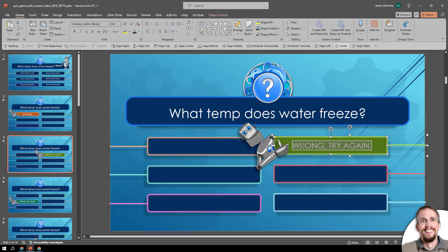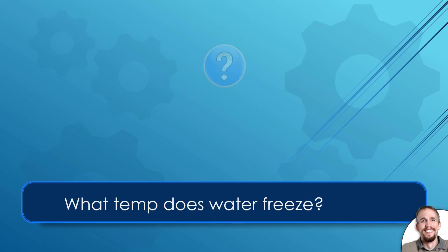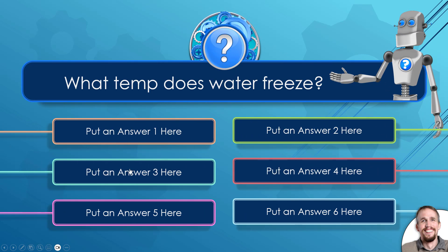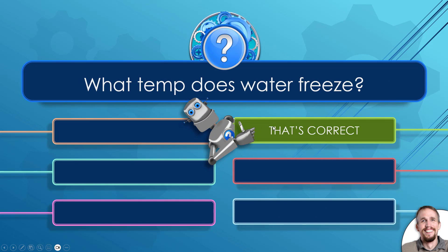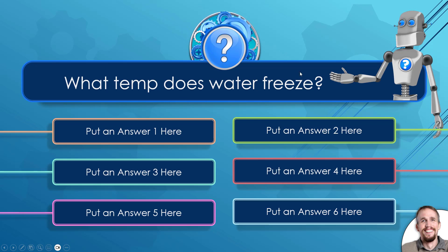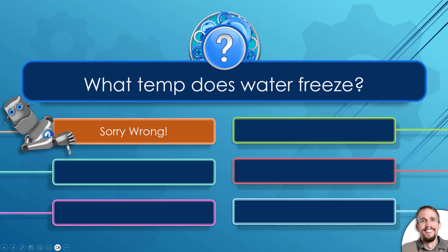Now this says 'wrong answer,' so I'll change this to 'that's correct.' Now when I play the slideshow and click on the answers, if I click on the green one, that's the correct answer because I changed the text on that slide. These are hyperlinked to each slide — the green one is hyperlinked to go to the green slide, the pink one to the pink slide, and so on. Just click the home icon in the bottom right to go back to the main question slide. Each of the other slides is going to say 'wrong answer.'